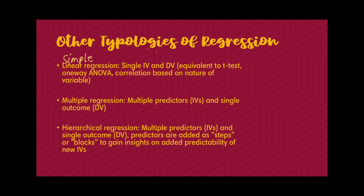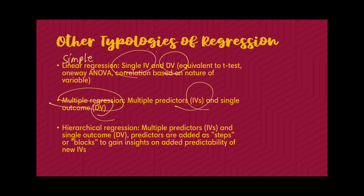Another way to categorize regression is by number of predictors. Simple linear regression has one single IV and one single DV, equivalent to a t-test, one-way ANOVA, or correlation depending on the nature of the IV. The dependent variable for linear regression is continuous, but the independent variable can be any type. What we will focus on is multiple linear regression, where we have multiple predictors and a single dependent variable — one advantage over correlational tests like Pearson and Spearman, where you only have one IV and one DV.